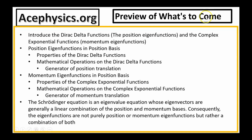Here's a preview of what's to come. I'll begin by introducing the position eigenfunctions in the position basis — these are the Dirac delta functions. I'll discuss properties of the Dirac delta functions and review the mathematical operations you can perform on them. One of the most important ones is the generator of position translation, and I'll go over this in detail.